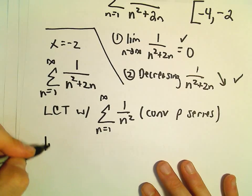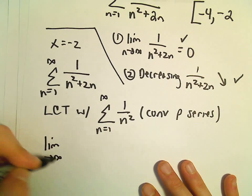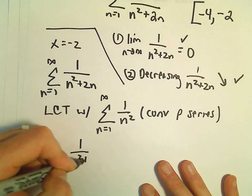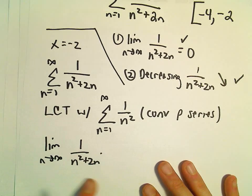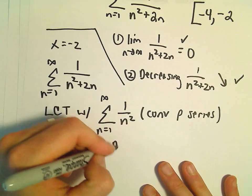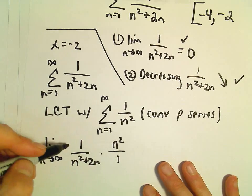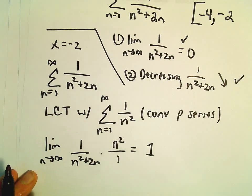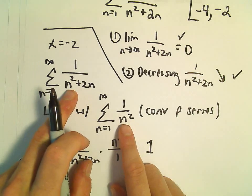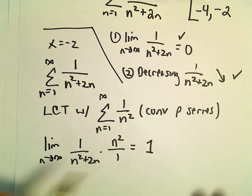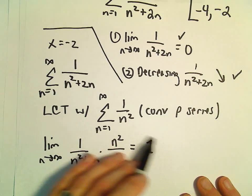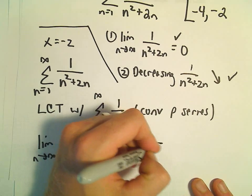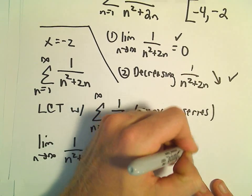And if we do the limit comparison test, so the limit as n goes to infinity, 1 over n squared plus 2n. We would divide by 1 over n squared, which is the same as multiplying by n squared over 1. This limit is going to equal positive 1. Again, a positive finite number. These all both have positive terms initially. Since it's a positive finite number, it says both series do the same thing. Which in this case is going to be converge.